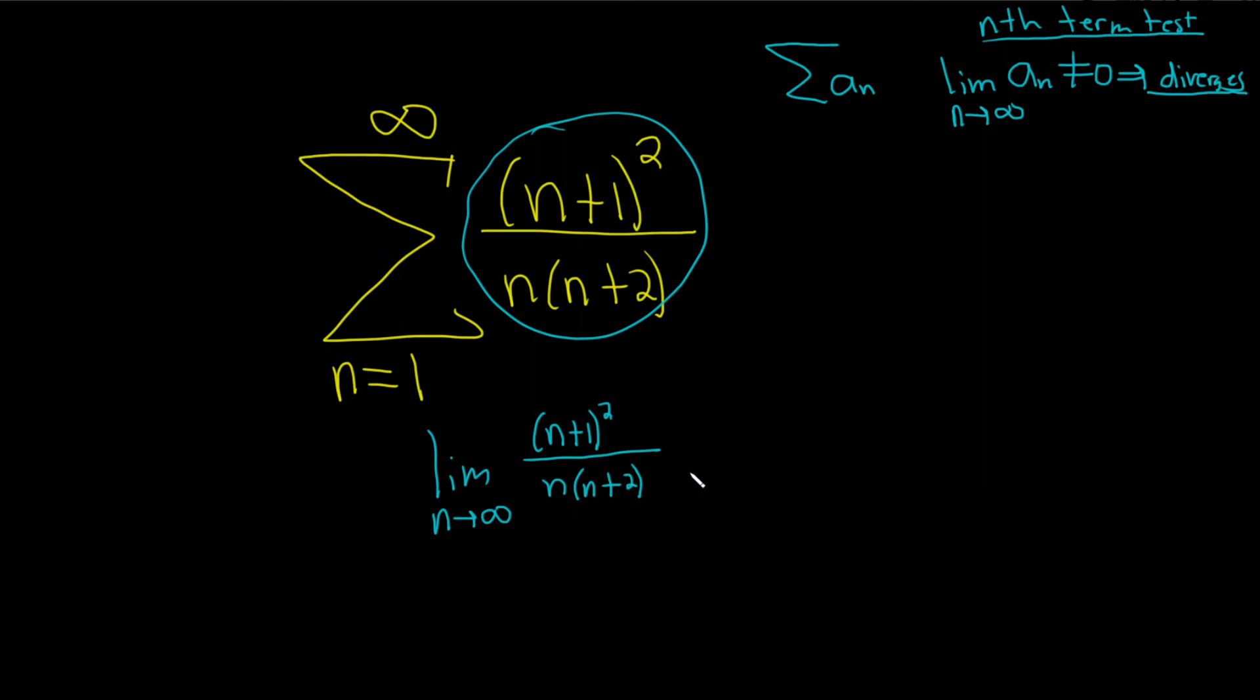And this limit is 1. How do I know that? I'm doing some mental math. Let me show you the mental math that I did. So, this is the limit as n goes to infinity.